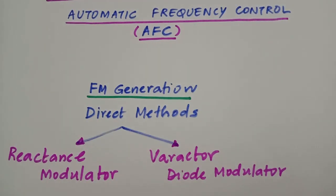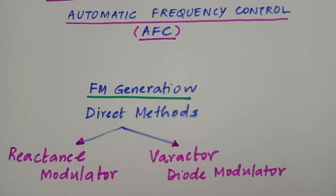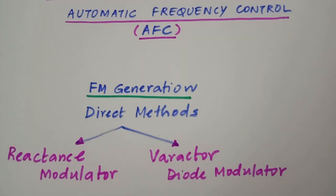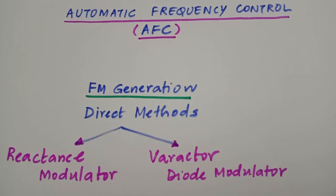Before we go into our topic for today, we shall have a short revisit on a few points which we have already discussed in the last classes. This will help us to understand the need for an AFC system in a transmitter. In the last classes we have seen two different techniques of generating FM waves by using direct methods.